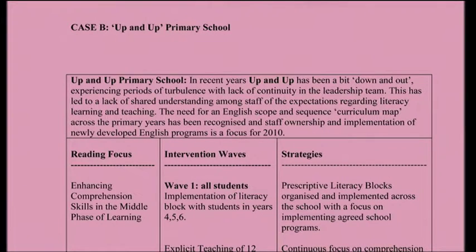Let me take you to Up and Up Primary School. Spend just about three minutes reading this summary of another school's intervention. You'll see it's also concentrating on comprehension. In the original pilot project, schools tended to go into the upper levels of primary schooling more than the lower levels, though at least a third concentrated on the first three of the big six. Very little was done on fluency, a bit more on vocabulary, and quite a deal in upper primary on comprehension.